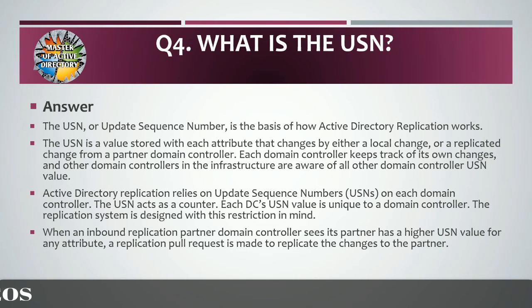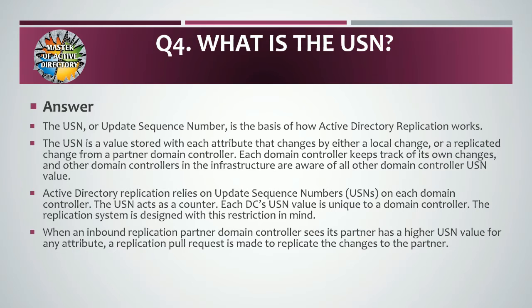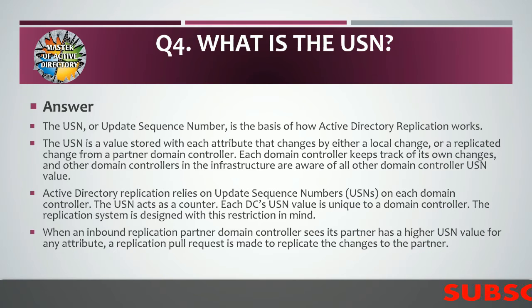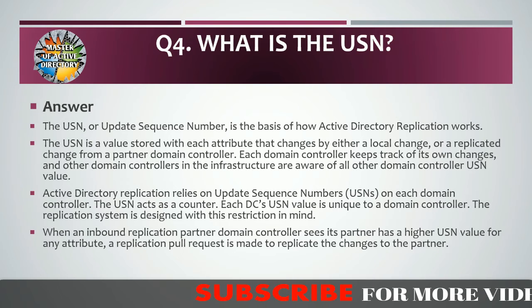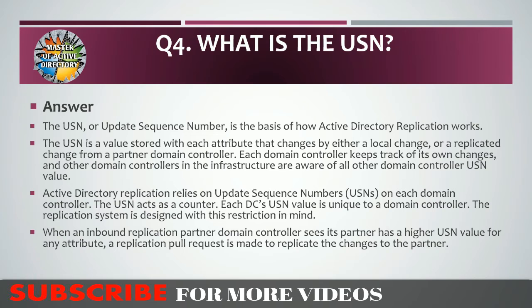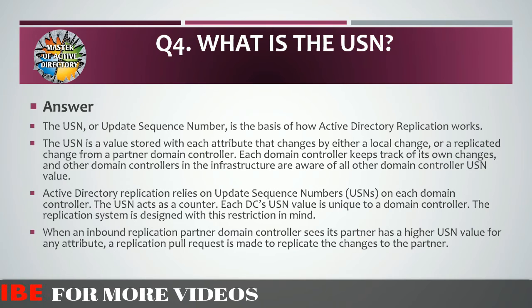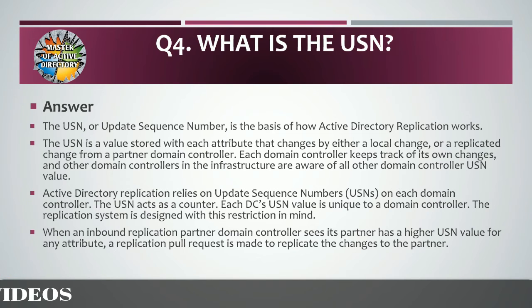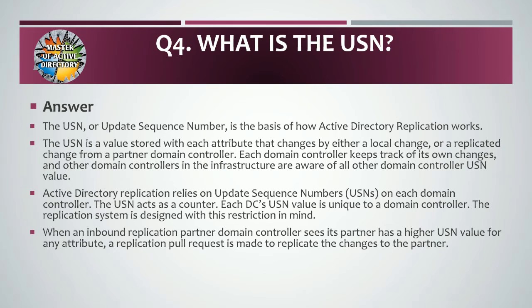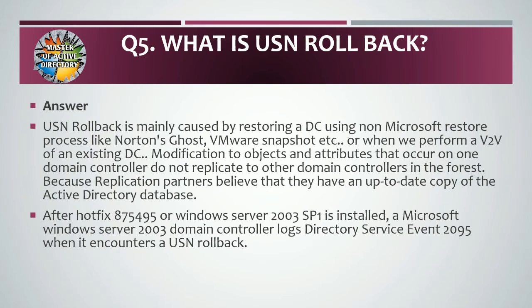Active Directory replication relies on Update Sequence Numbers on each domain controller. The USN acts as a counter, and each DC's USN value is unique to that domain controller. The replication system is designed with this in mind: when an inbound replication partner domain controller sees its partner has a higher USN value for any attribute, a replication pull request is made to replicate the changes. Question number five: what is USN rollback?